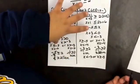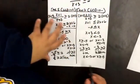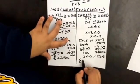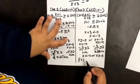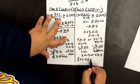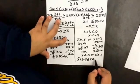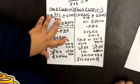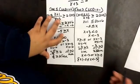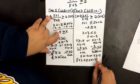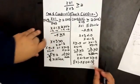If we write it in set builder notation, we can write it as the set of all x's such that x is greater than or equal to negative 5 and less than negative 3.